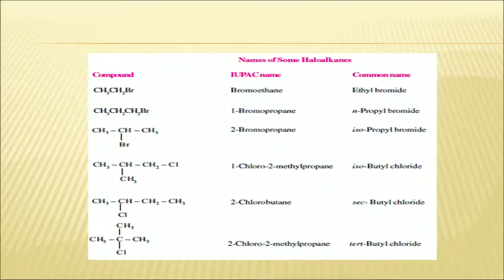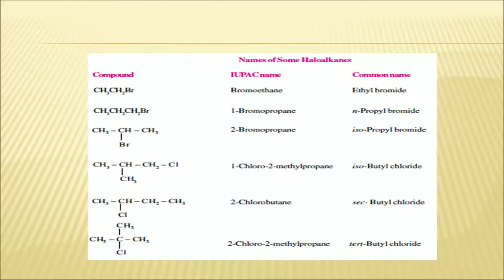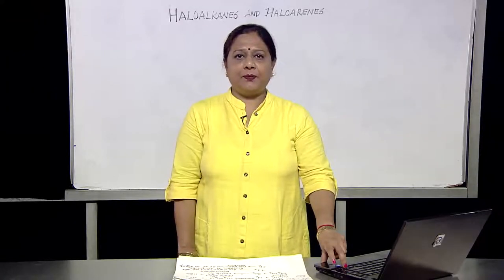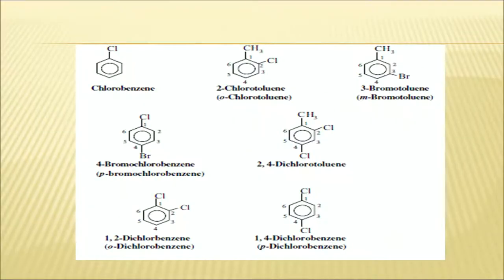Looking at the naming table: CH3CH2Br is called bromoethane, prefixing the halogen before the hydrocarbon name. For CH3CH(CH3)CH2Cl, we number from where the halogen is — one chloro, two methyl, parent chain propane. For haloarenes, chlorine as a substituent on benzene gives chlorobenzene. With an additional CH3 group, it becomes 2-chlorotoluene, since toluene is preferred as position one.